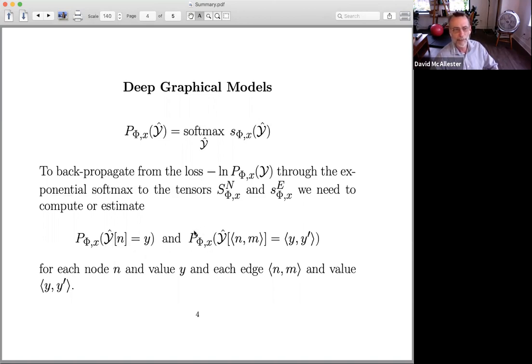And similarly, the probability under the distribution defined by the exponential softmax that a given edge has a given label, a given pair of node labels. So if we can compute these probabilities, that's enough to do the back propagation from our loss function back into the tensors. And then if we get it back into the tensors, we get it back to the deep network. So that's where we are.